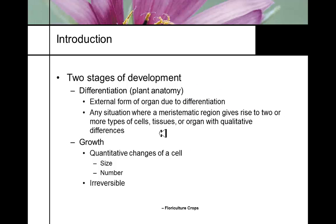In basic botany, we think of two stages of development as a plant grows. There's differentiation, where different cells differentiate into different tissues — you covered de-differentiation into roots and meristems in plant propagation. We form new organs based upon differentiation of tissue, whether it be a root, leaf, fruit, or flower. Any situation where a meristematic region gives rise to two or more different kinds of tissues is classified as differentiation. These are qualitative differences — there's a change in form and structure.